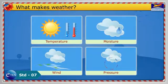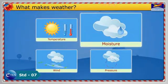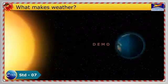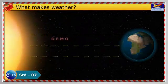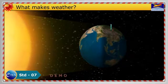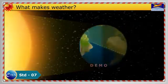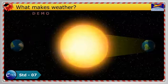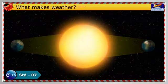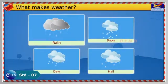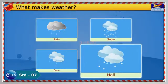What makes weather? There are four key elements of weather including temperature, moisture, pressure, and wind. Temperature refers to how the sun rays warm up our atmosphere. In winter, the angle of the earth is tilted away from the sun. During summer, the earth is tilted towards the sun, making the rays of the sun more powerful, which heat up the atmosphere. Moisture would include rain, snow, hail, and dew.